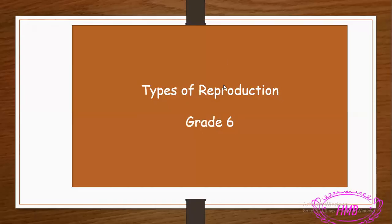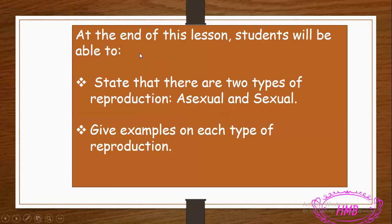Our lesson today is about types of reproduction. At the end of this lesson, students will be able to state that there are two types of reproduction: asexual and sexual. The second objective is they will be able to give examples of each type of reproduction.